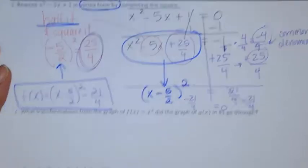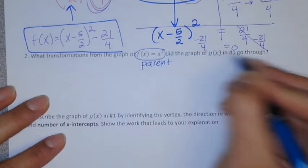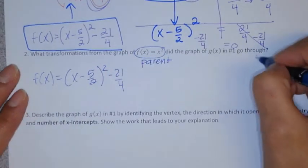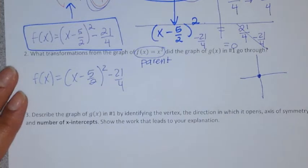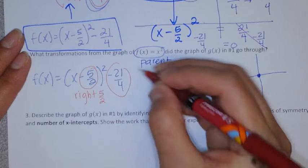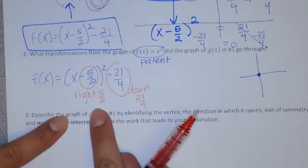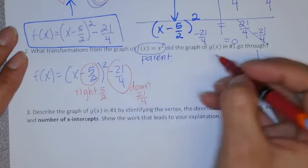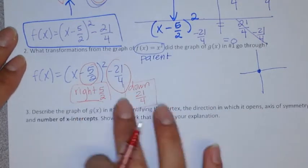The next one asks for what transformation went on from the parent. This is the parent, x². So I'm going to write my vertex form here. I'll do a quick sketch. So the parent goes here at 0, 0. So the parent will be like the part that's here. But in this case, what happened to the parent? Well, it moved right 5 halves and down 21 fourths. That's all you have to say. So the transformations, it moved to the right 5 halves and down 21 over 4. That's it. That's your answer for this one. You can write it as a sentence. From the parent, it moved so and so.